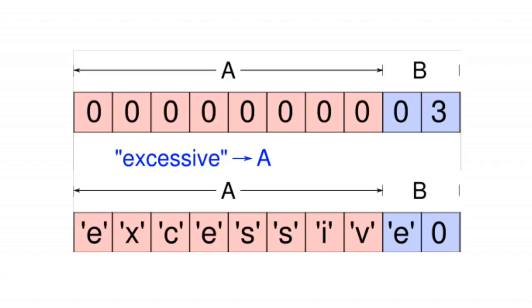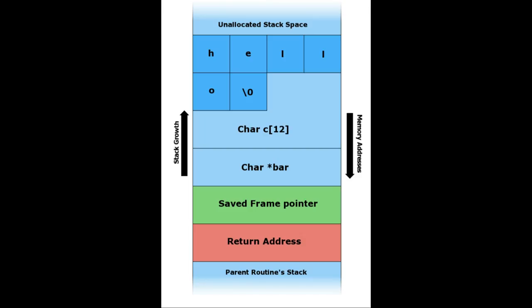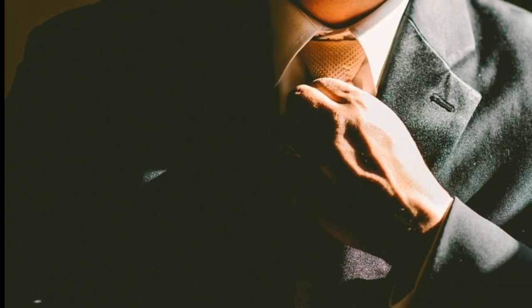Buffer overflow is an example of bad programming. This vulnerability is caused by developers who are new to programming and leave such conditions which don't raise any error. It is generally seen in C and C++ languages. Newer languages like C#, Java, and Perl have somewhat reduced this vulnerability. So this was a basic overview of buffer overflow.